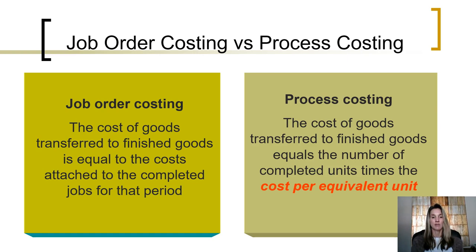However, in a process costing system, the cost of goods transferred from goods in process to finished goods is equal to the number of completed units times a cost per equivalent unit.